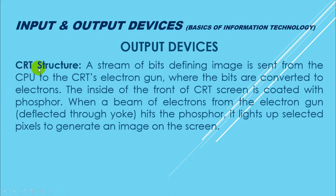CRT structure: Cathode tube ka structure kya hota hai? A stream of bits defining the image is sent from the CPU to the CRT's electron gun. CPU jo bits ki stream hai — jis se image banni hai — uski stream CRT electron gun ko transfer kar di jaati hai system ki taraf se, where the bits are converted to electrons. Jis tarteeb se wo bits aate hain, usi tarteeb se unhe electrons mein convert kar diya jaata hai. The inside of the front of the CRT screen is coated with phosphor. Jo CRT screen ke andar ki taraf ka part hota hai usko phosphor se coated kar diya jaata hai.